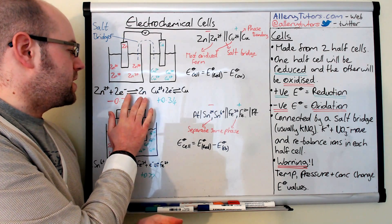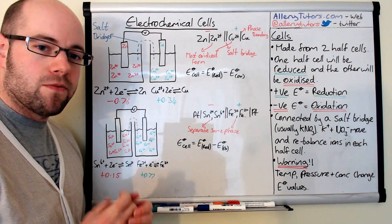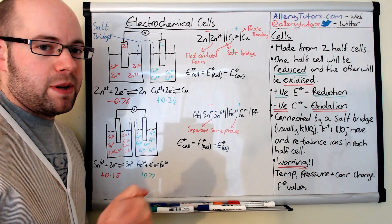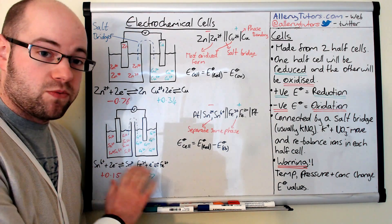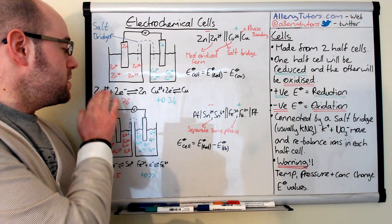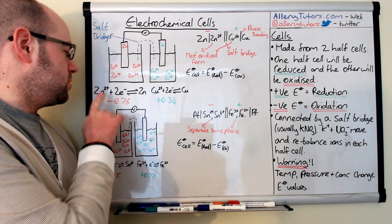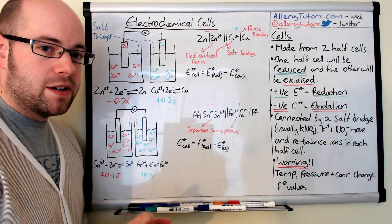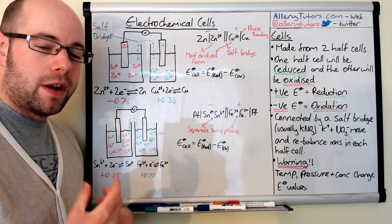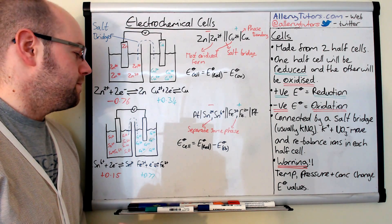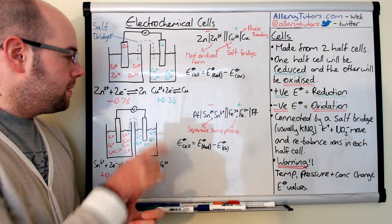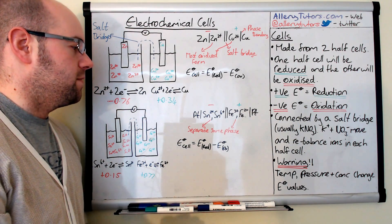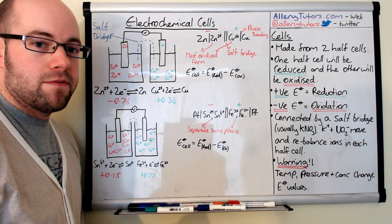All of our equations here are written in the reduced form, meaning the electrons are written on the left-hand side irrespective of whether the reaction is actually being reduced or oxidised. So the two half cell equations are: Zn²⁺ + 2e⁻ → Zn, with a standard electrode potential of −0.76 V, and Cu²⁺ + 2e⁻ → Cu, with +0.34 V. The negative E° value means zinc is going to undergo oxidation, and the positive value means copper is the reduction process.